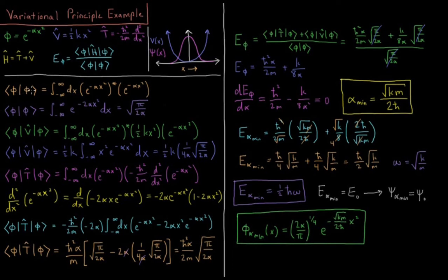The denominator is the normalization integral: the integral from negative infinity to infinity of e to the minus alpha x squared complex conjugate times e to the minus alpha x squared. Since there's no imaginary part, the complex conjugate just equals the wave function, so we can square it. This gives the integral of e to the minus 2 alpha x squared dx, which from an integrals table equals the square root of pi over 2 alpha.